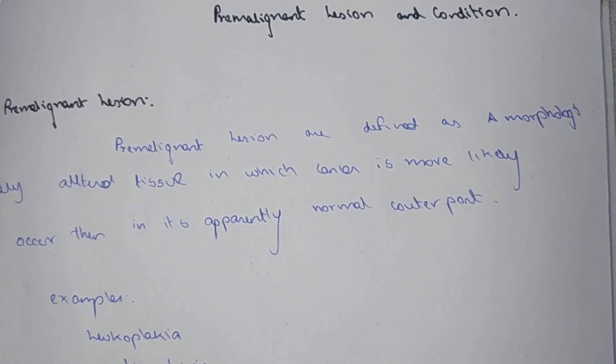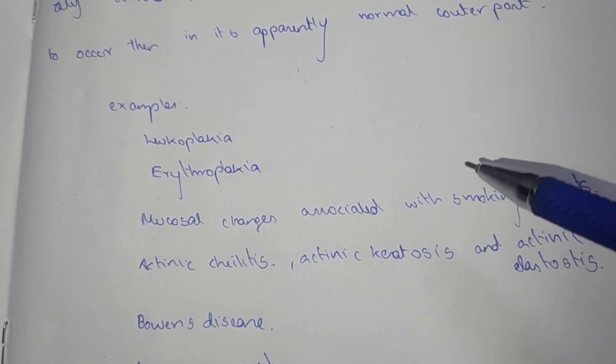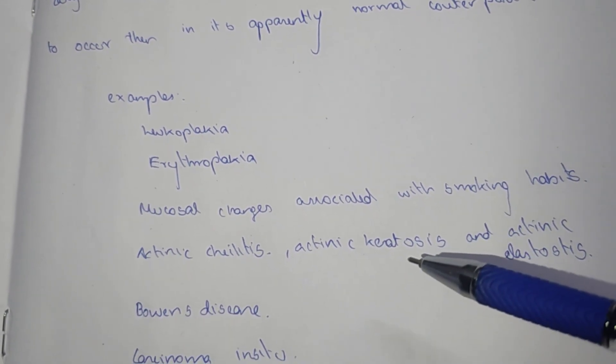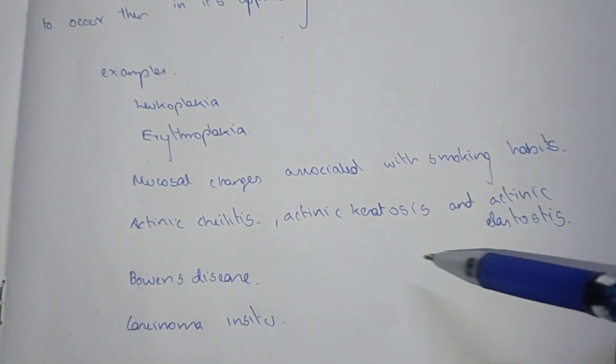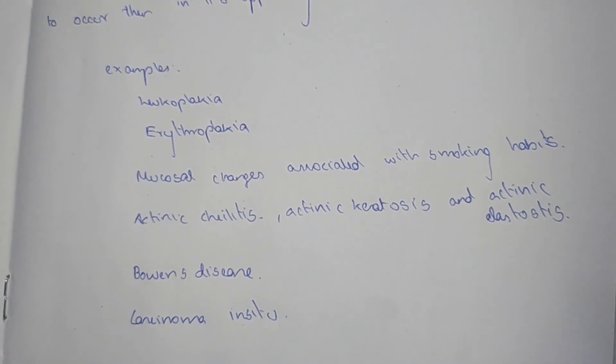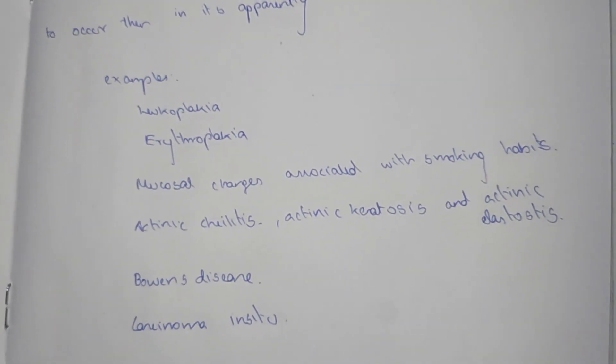Examples of this are leukoplakia, erythroplakia, mucosal changes associated with smoking habits like cheilitis, keratosis and elastosis, Bowen's disease, and carcinoma in situ. In these areas, cancer occurs more commonly.